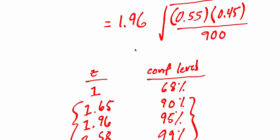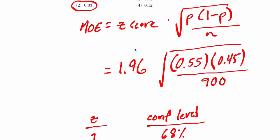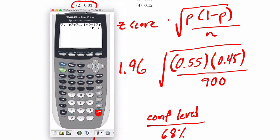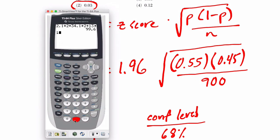Let's figure out this problem and make sure it's actually 0.03. So we get 1.96 times the square root of 0.55 times 0.45 divided by 900, and you actually get about 0.03.